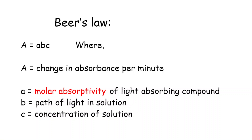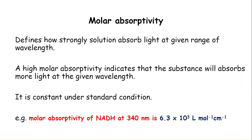Here, capital A equals change in absorbance per minute; small a equals molar absorptivity of the light-absorbing compound, which is constant for a particular compound; B is the path length of light in solution, which is also constant — usually one centimeter; and C is the concentration of the solution. From Beer's law, absorbance is directly proportional to molar absorptivity, path length, and concentration.